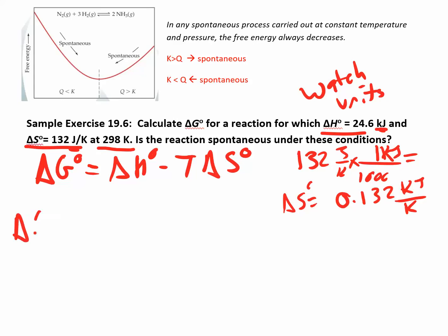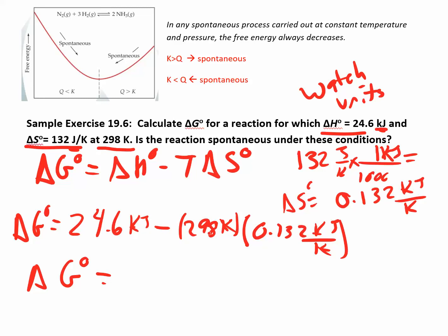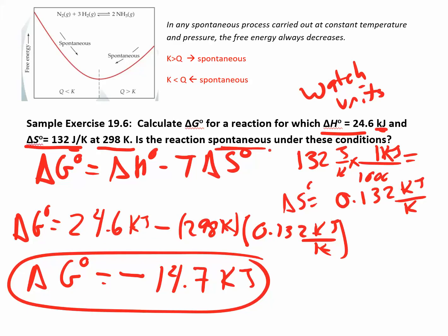So then the rest we can just plug in. So we have delta G naught is delta H, 24.6 in kilojoules, minus T, which is 298. Make sure your temperature is in kelvin and delta S is going to be 0.132 kilojoules per kelvin. So your kelvins are going to cancel. You'll end up with something in kilojoules. So you just multiply these two and then take the 24.6 minus whatever you get there and you end up with like negative 14.7 kilojoules. So this is going to be spontaneous because delta G is negative.